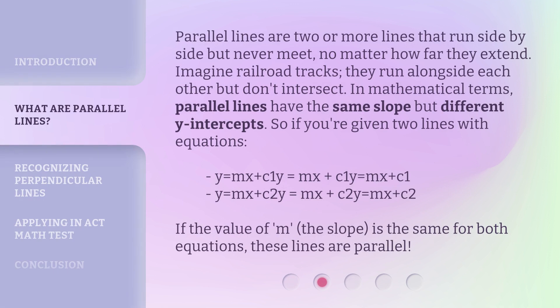Parallel lines are two or more lines that run side by side but never meet, no matter how far they extend. Imagine railroad tracks; they run alongside each other but don't intersect. In mathematical terms, parallel lines have the same slope but different y-intercepts.